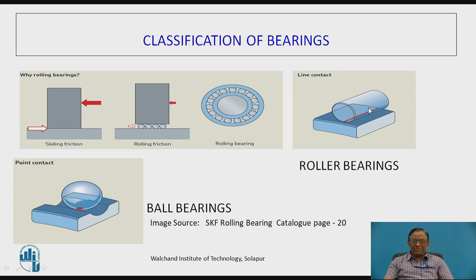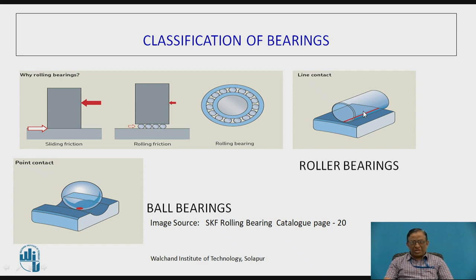In case of roller bearings, as you see over here, there is a line contact between the roller and the races — that is the outer race or inner race. Because the area is more for contact, the load carrying capacity of these bearings is very high. So these are normally used for very heavy radial loads or thrust loads in case of thrust bearings. However, they can be used for moderate speeds.